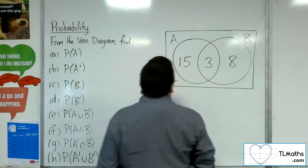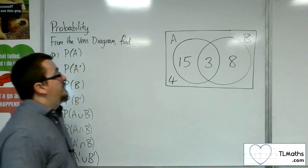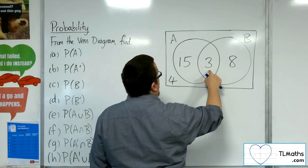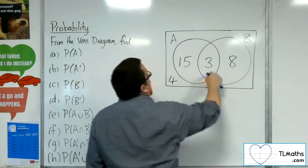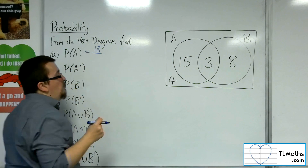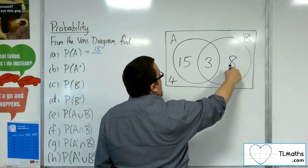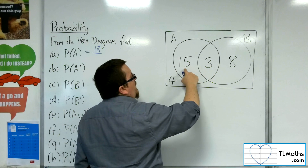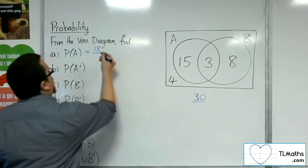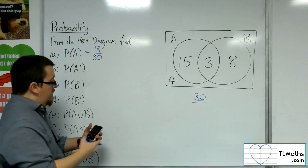So if I want to find the probability of A — so the probability of picking an item from the circle of A — inside the circle we have 15 and 3, so there are 18 attributed to A. If I add up all of these numbers that gives me the total: 8, 3 is 11, 15 makes 26, plus 4 is 30. So 30 is the total, making it 18 out of 30, which is 3 fifths.